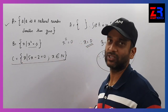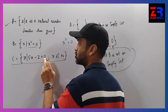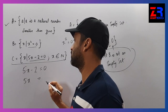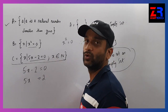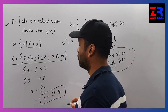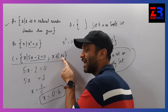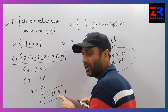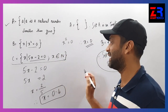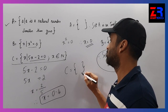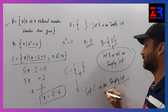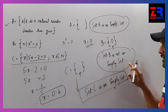Last question, answer number 3: X such that 5x minus 2 is equal to 0. Solving: 5x equals 2, therefore x equals 2 upon 5 equals 0.4. Is 0.4 a natural number? X belongs to natural numbers, but 0.4 is not a natural number because natural numbers start from 1. That condition is not satisfied, so set C is an empty set. Summary: set A is empty, set B is not empty, and set C is an empty set.